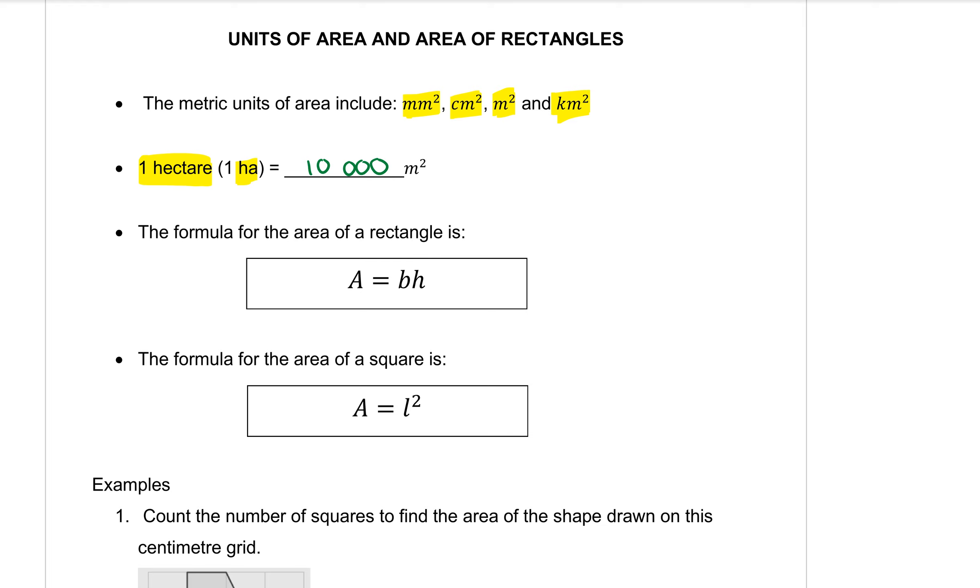We also need to talk about a couple of formulas here for area. Today we're talking about rectangles mostly but in that we also want to mention the square as well. So the formula for the area of a rectangle is A, A stands for area, equals B times H. Now some people use different letters there. Some people say LB for length times breadth or L times W length times width. There's different letters that you can use there in the formula but it just means the two dimensions of your rectangle need to be multiplied together to find the area.